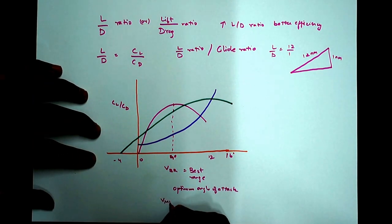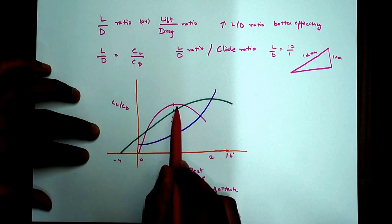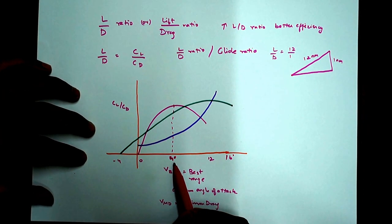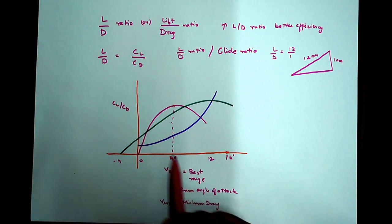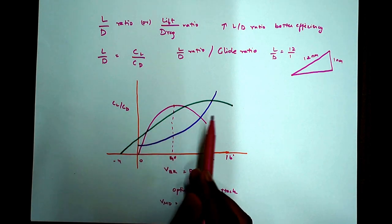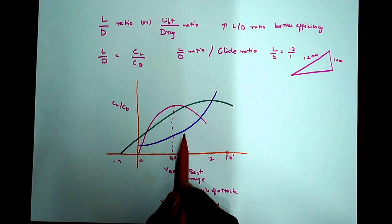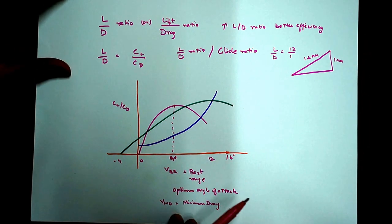Or you'll also call it as VMD. Speed for minimum drag. So your drag is the least at the highest L by D ratio. That will be corresponding to almost 4 degrees of angle of attack. Alright. So this is your CL by CD graph. It's very important to understand and interpret from the graph.